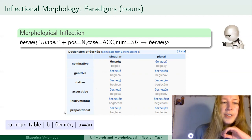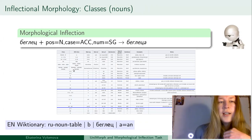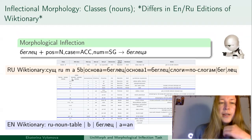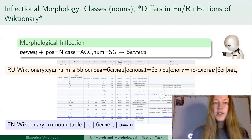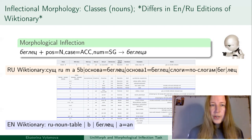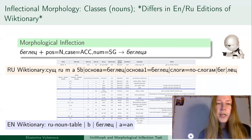This table is generated using a specific template that has certain arguments such as animacy and stress pattern. If we look at this template, we can also extract declension classes. Crucially, if we compare the Russian edition of Wiktionary to the English edition for the same Russian language, we see that they are different — they have different approaches to describing Russian morphological paradigms.